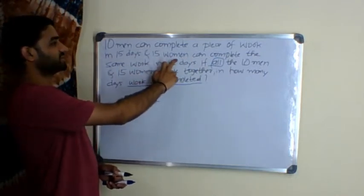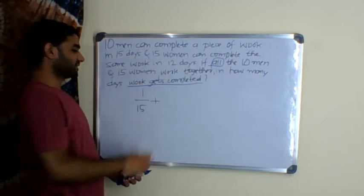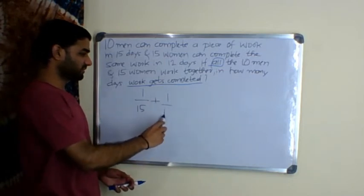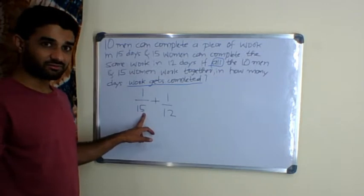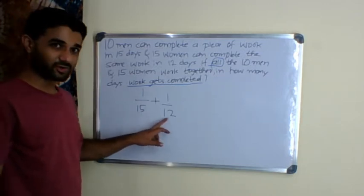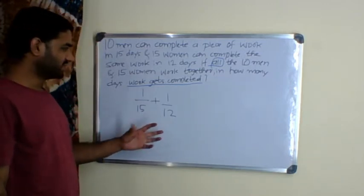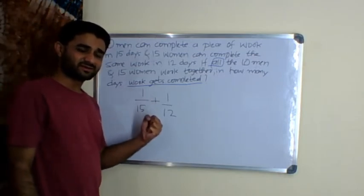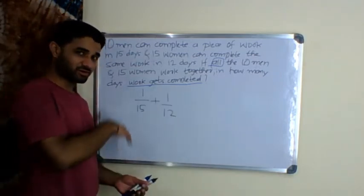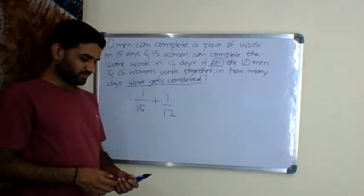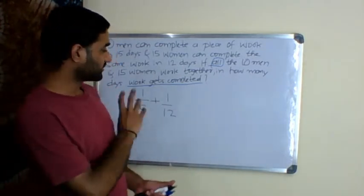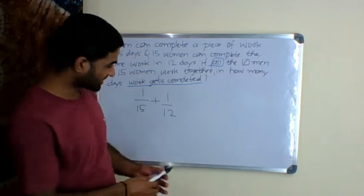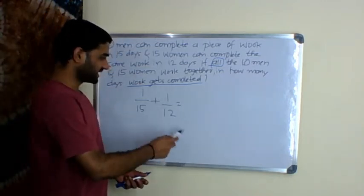If work is getting completed in 15 days, in one day 1/15 work is completed by 10 men. Notice here: the question asks in how many days work gets completed if all 10 men and 15 women are working together. So we need to add women's work. Since 15 women complete the work in 12 days, in one day it's 1/12.